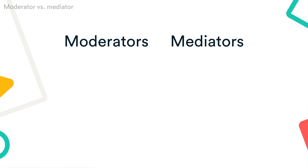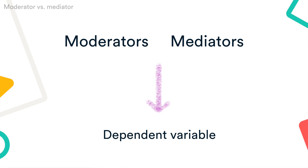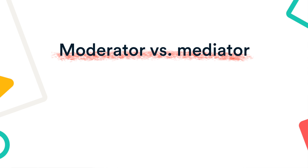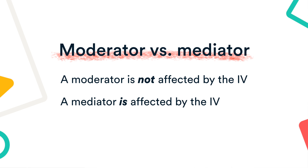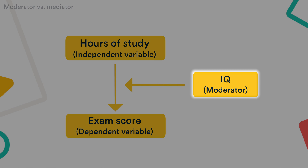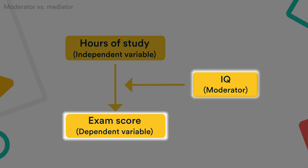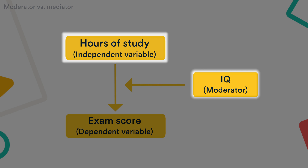While both moderators and mediators have an impact on the dependent variable, the key difference between them is: a moderator is not affected by the independent variable, whereas a mediator is affected by the independent variable. For example, IQ is a moderator, not a mediator. Although IQ may impact the exam score (the dependent variable), the number of hours spent studying (the independent variable) does not affect IQ. No matter how many hours you study, your IQ will not increase.